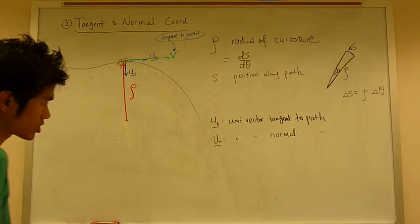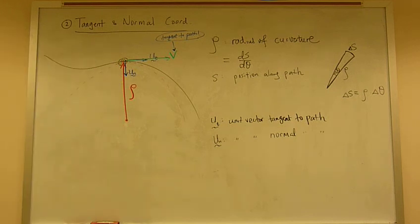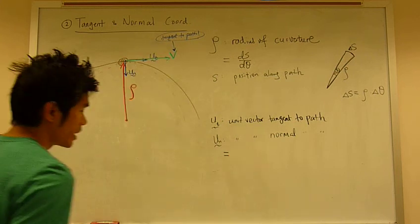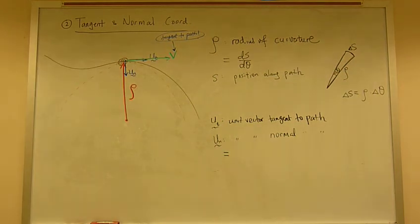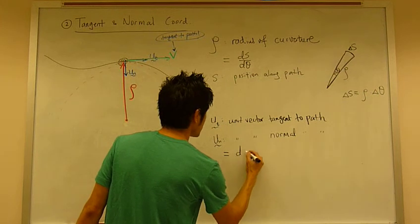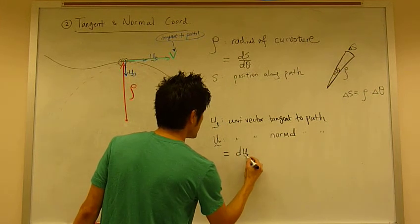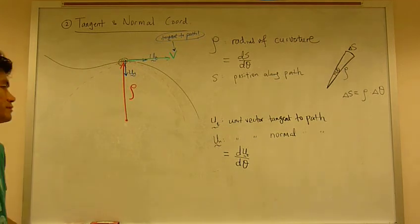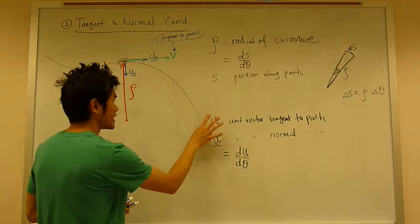Now, one thing kind of special about the ut and un is that the relationship between them is related by this: un is actually equal to the derivative of ut with respect to theta. So that's how they're related.